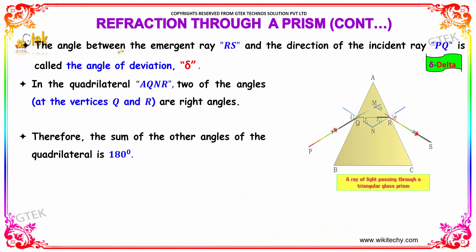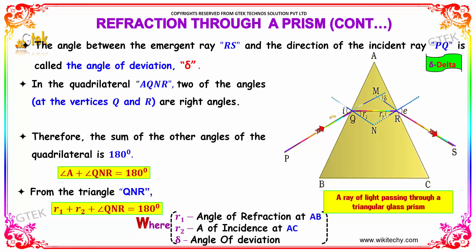The angle between the emergent ray RS and the direction of the incident ray PQ, from here it goes refracted and it came down, this is called the angle of deviation delta.